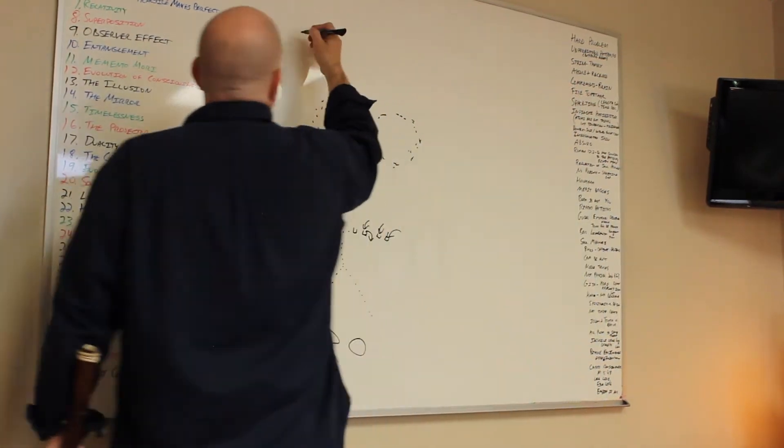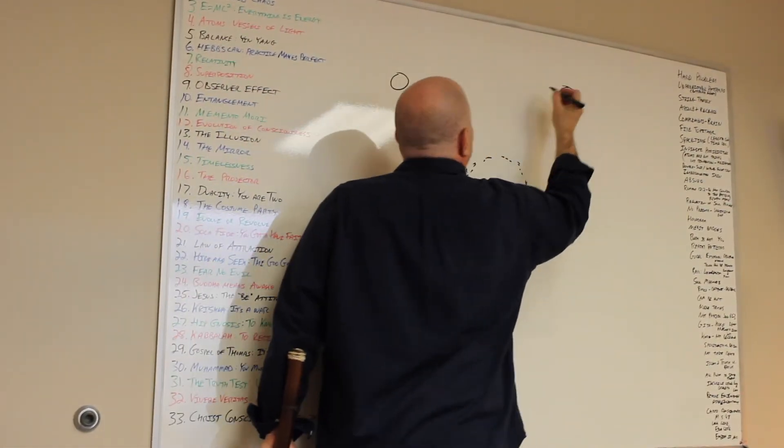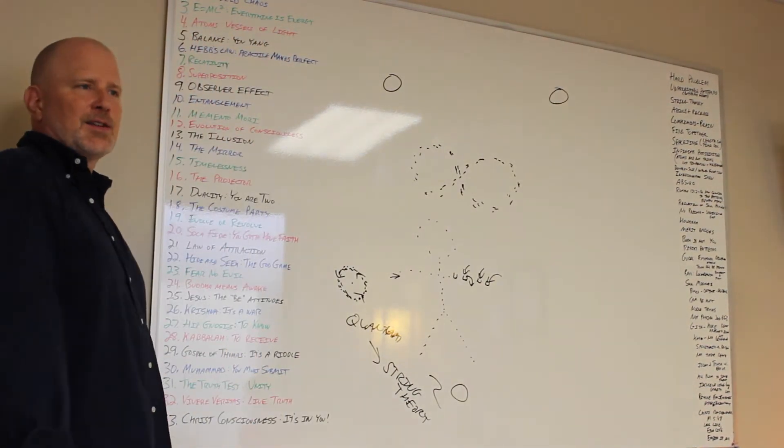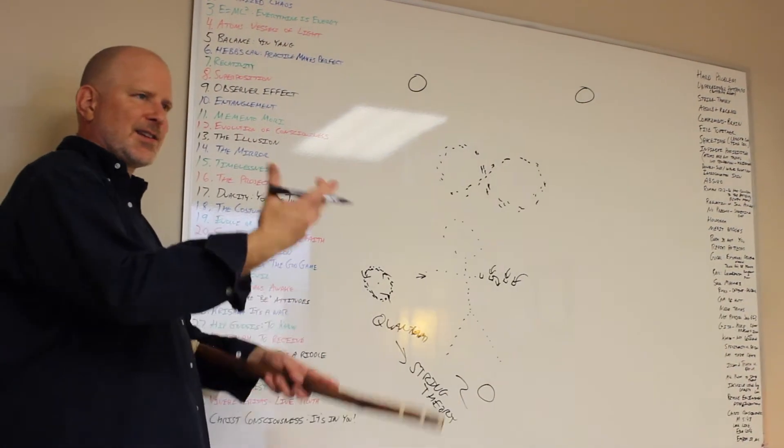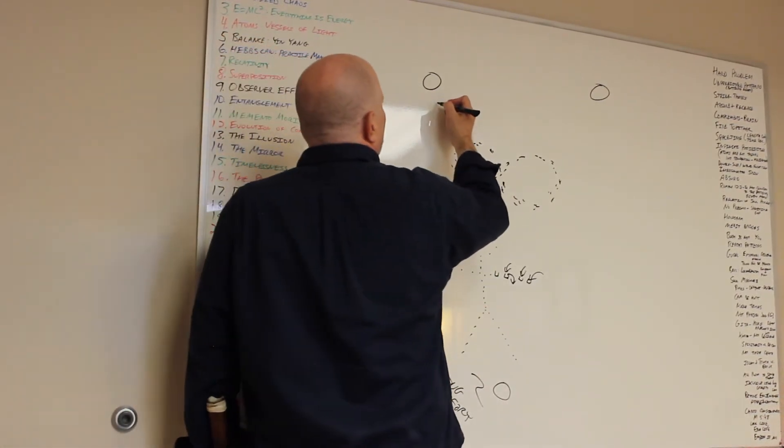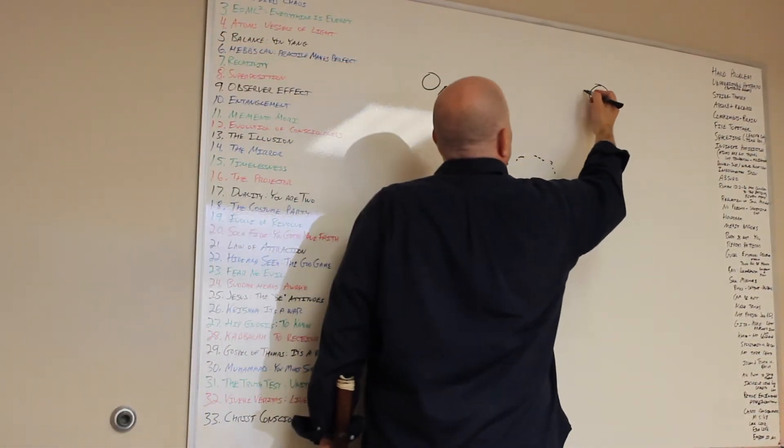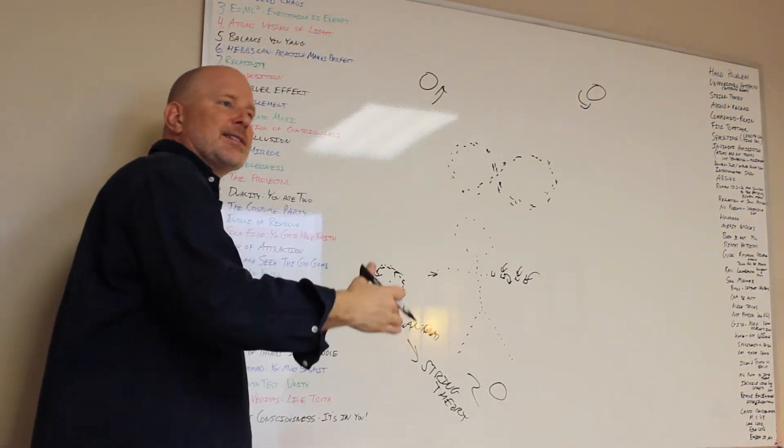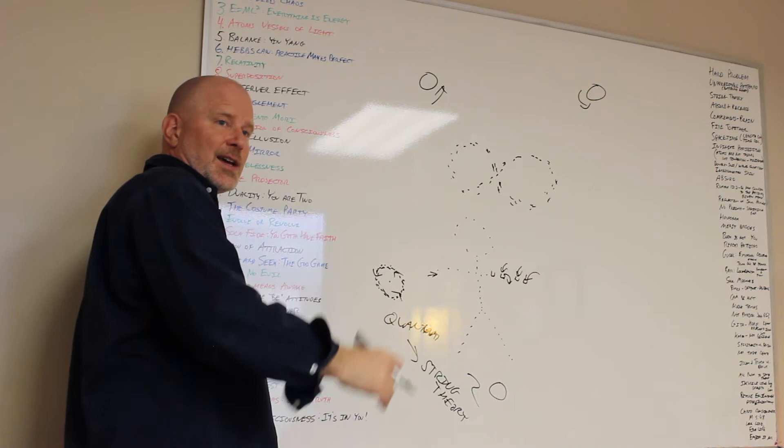In entanglement, Einstein and friends were able to determine that particles from a certain distance apart are able to affect each other. In their terminology, it's called spin. If one particle moves one way, the other particle will simultaneously move the other way. These things impact each other from a distance. Einstein called this spooky action at a distance.